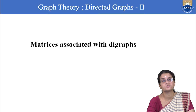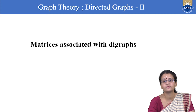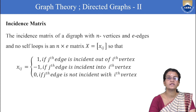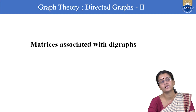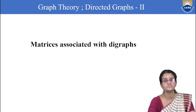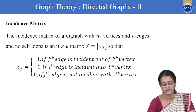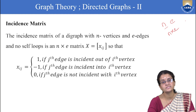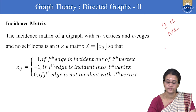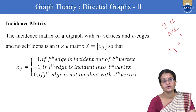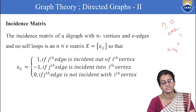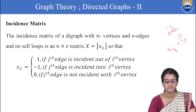Now we will see the matrices associated with digraphs. We have already seen the incidence matrix and adjacency matrix for undirected graphs. For a digraph of order n and size e, the incidence matrix is an n×e matrix where aij = 1 if the j-th edge is incident out of the i-th vertex, aij = -1 if the j-th edge is incident into the i-th vertex, and aij = 0 if the j-th edge is not incident with the i-th vertex.